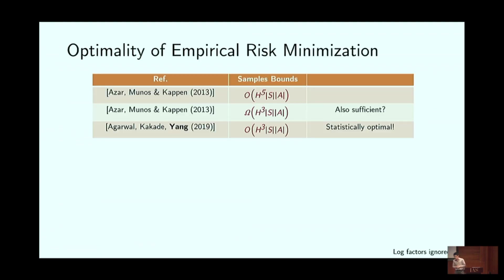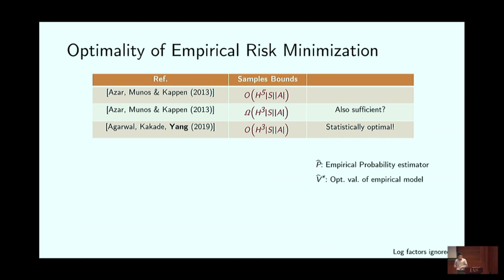For this simple algorithm, the prior understanding was unclear. Previously, the best upper bound on the sample complexity's dependence on H was H to the fifth power, while the lower bound was H³. We recently showed that this simple algorithm is statistically optimal — the dependence on the horizon is exactly H³. However, the analysis of this algorithm is not easy. We showed that the estimation error is characterized by an inner product of the empirical model with the optimal value function for the empirical model minus the true model with the same quantity.